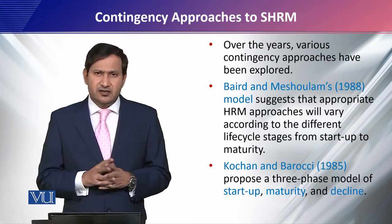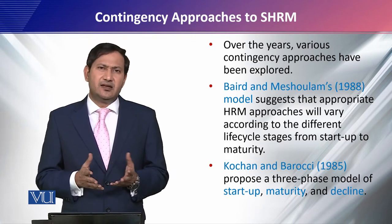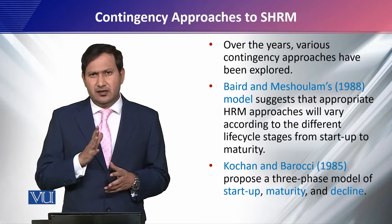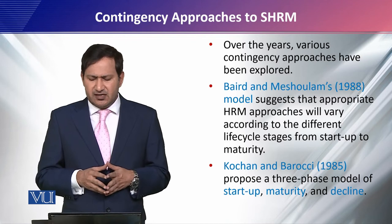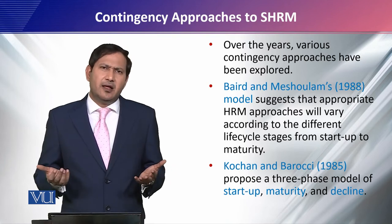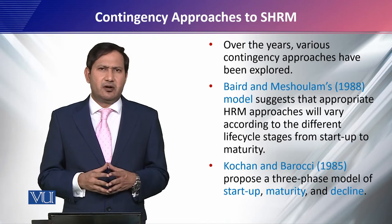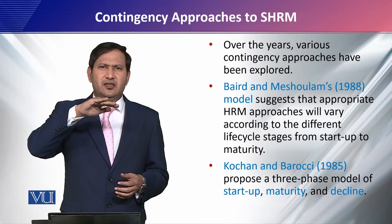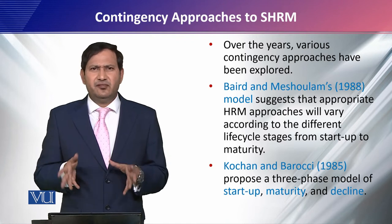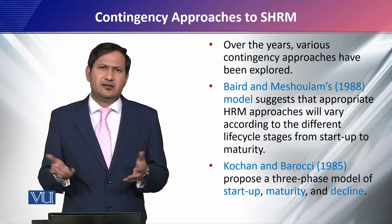Over the years, various contingency approaches have been explored. One model was presented by Baird and Meshulam, who suggested that the appropriate HRM approaches will vary according to the different life cycle stages of an organization. These are mainly four stages: the introduction stage, the growth stage, the maturity stage, and the decline stage. How to manage people depends on which stage the company is in.